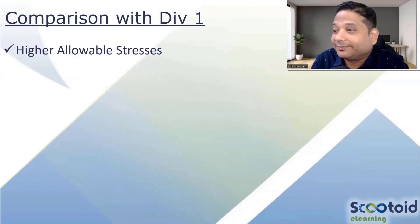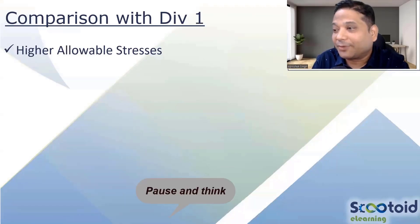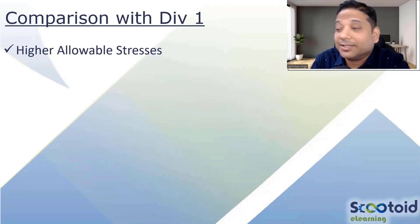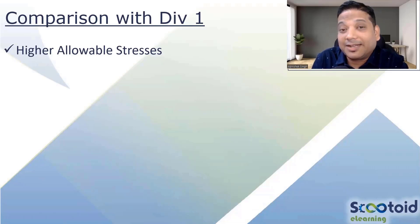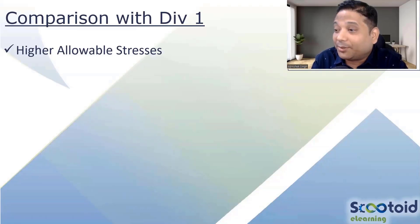So what is the main difference between Division 2 and Division 1? The answer is allowable stresses — Division 2 has higher allowable stress, which is the biggest advantage of using Division 2. That is the reason everything is moving towards Division 2 now, because it has higher allowable stresses compared to Division 1.